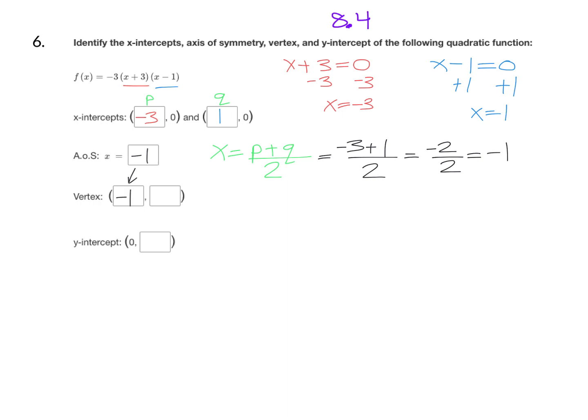To find the y-coordinate of the vertex, we just need to evaluate the function at x equals negative one. Remember, f of x is the same as y. So to find the y-value there, we're just going to take the function. We're going to replace both the x's with negative one. So I have negative three times negative one plus three times negative one minus one.